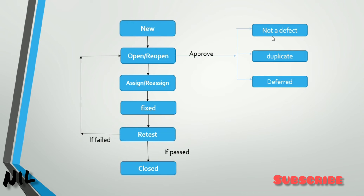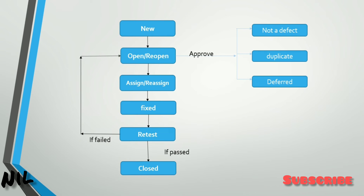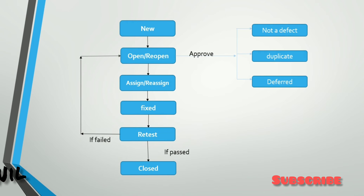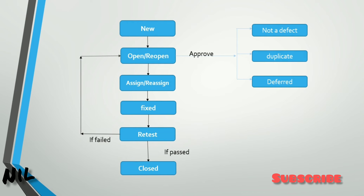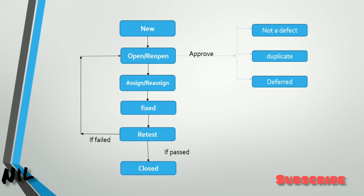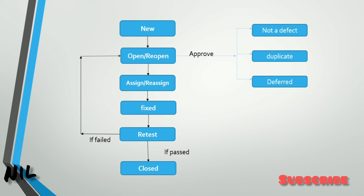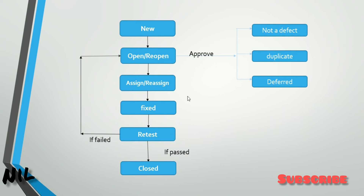The third special stage is Not a Defect. A fresher tester who doesn't know much about the functionality might report something as a defect when it actually isn't. In that case, the Team Lead will mark it as 'Not a Defect.' But when it is confirmed as a valid defect, it is assigned to the developer.